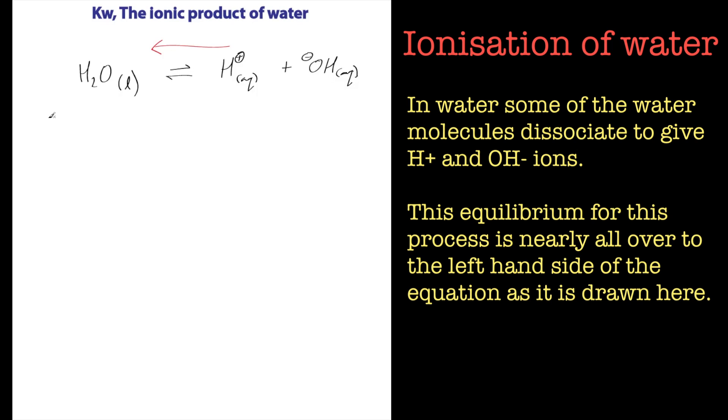Now, at 25 degrees Celsius, this has a dissociation equilibrium constant, and that's called Kw. At 25 degrees, it's got a value of 1 times 10 to the minus 14 mole squared decimeter to minus 6.